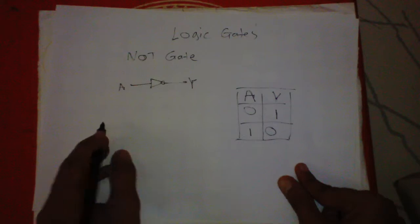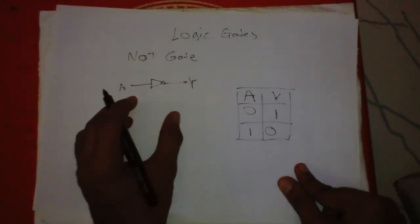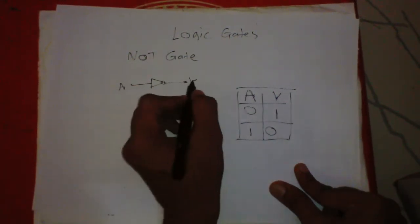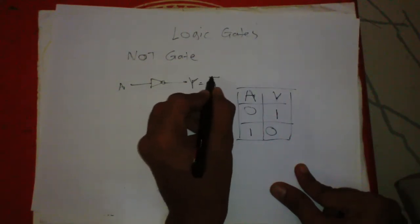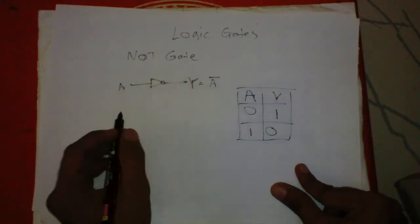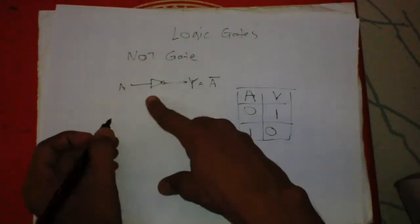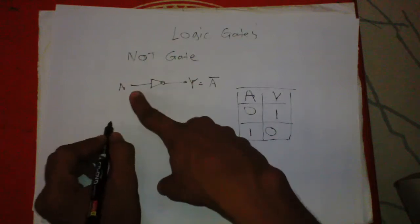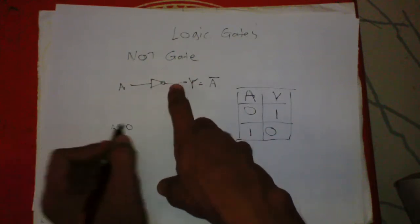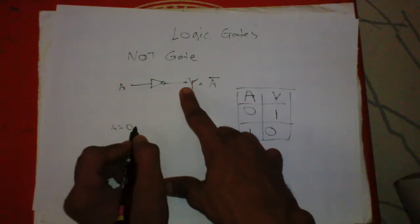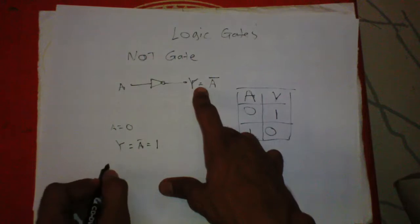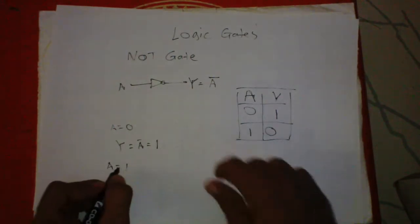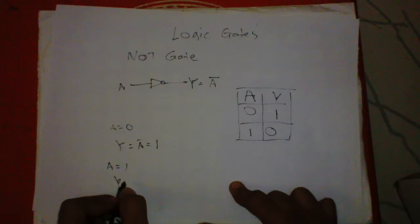We denote the NOT operation as a bar. The output is A inverse, so we write it as A bar. If A equals zero, then the output of the NOT gate, A bar, equals one. And if A equals one, the output of the NOT gate, A bar, equals zero.